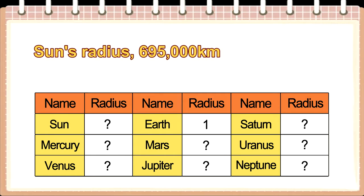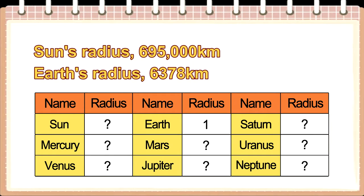The actual radius of the Sun is 695,000 kilometers. The Earth's radius is 6,378 kilometers. If the Earth's radius is 1, then the Sun's radius would be 109.